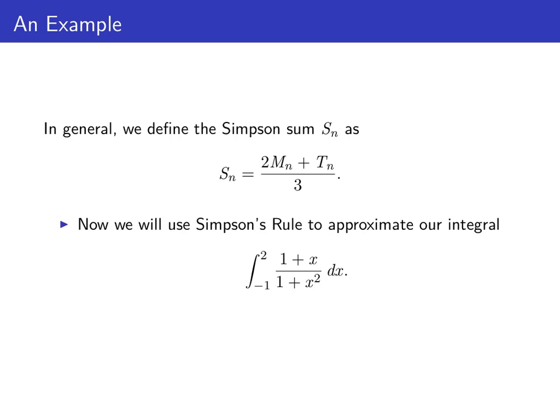So in general, we'll define the Simpson's sum Sₙ as that weighted average: two thirds of the midpoint sum plus one third of the trapezoid sum.